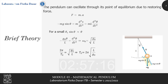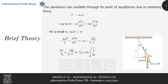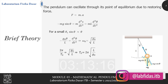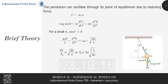Angular velocity can also be represented by 2π divided by t0, or 2π per period. So we have the equation: 2π/t0 equals the square root of g₀/l. Rearranging the variables, we arrive at t0 equals 2π times the square root of l divided by g₀.